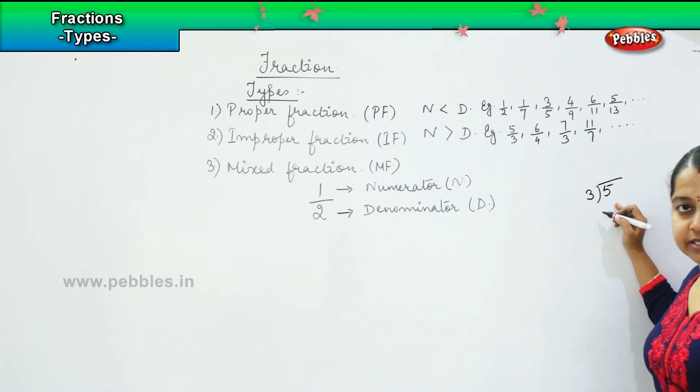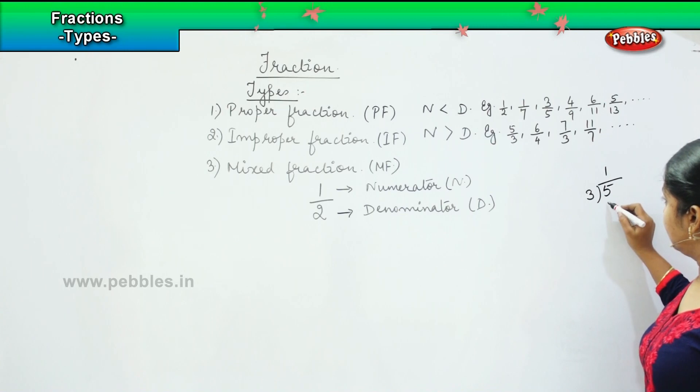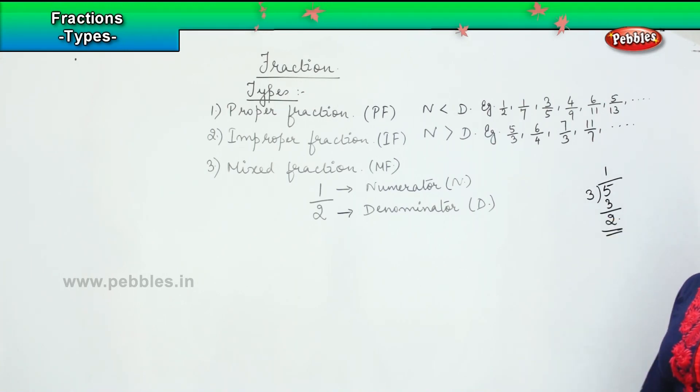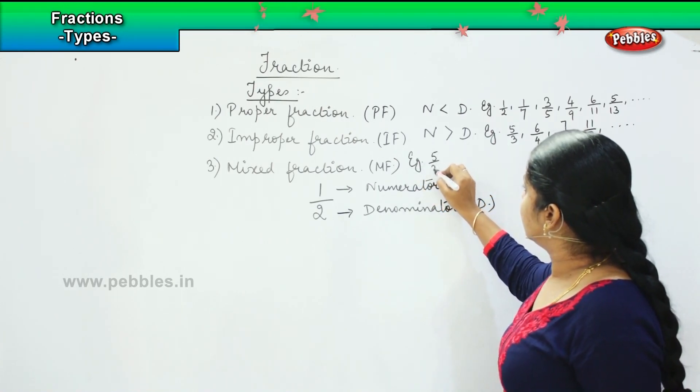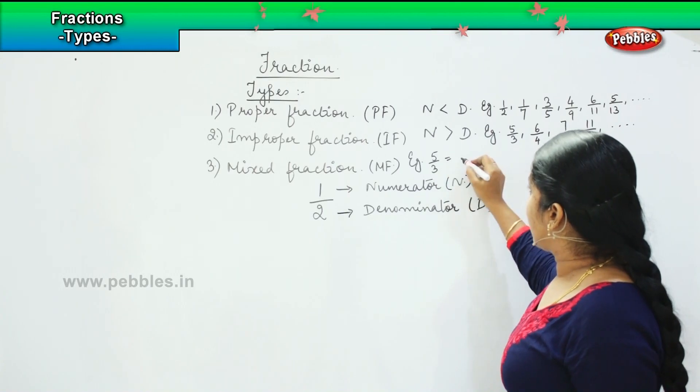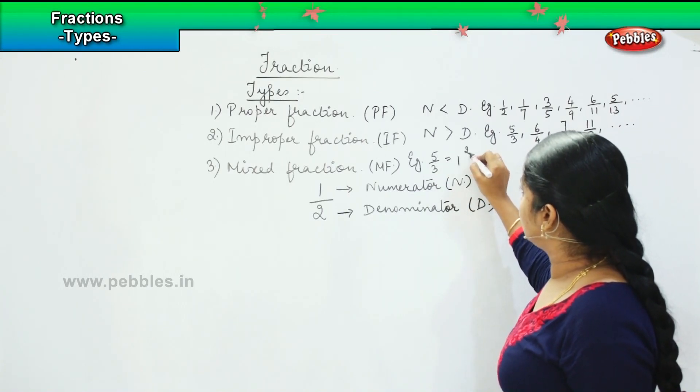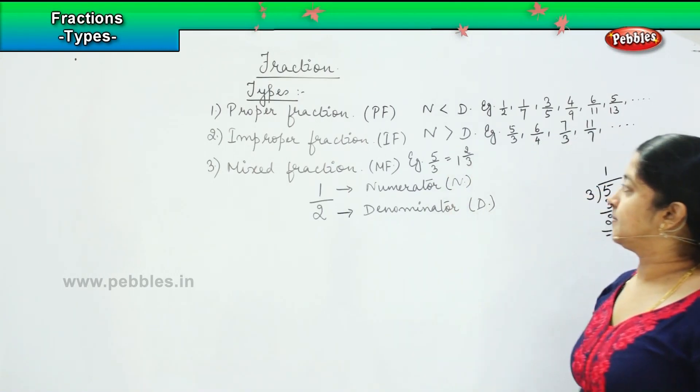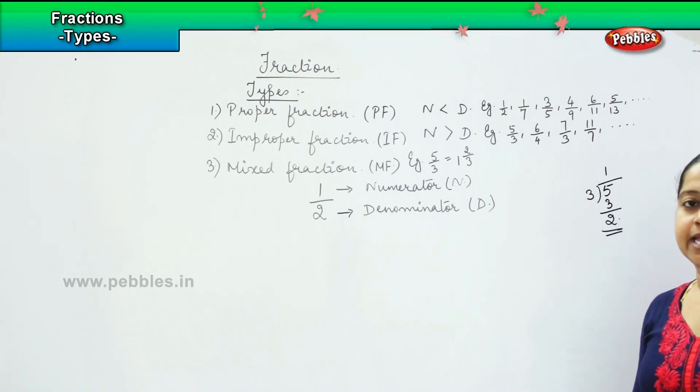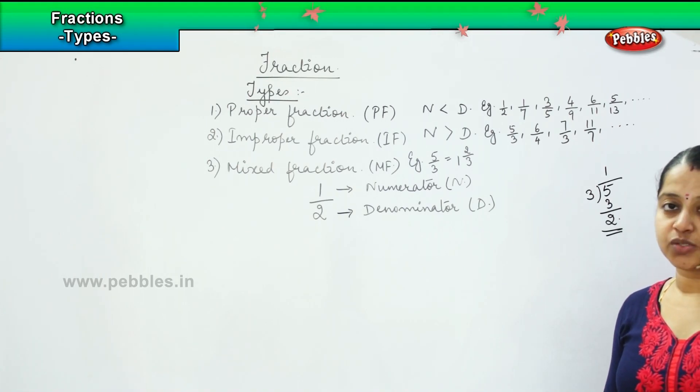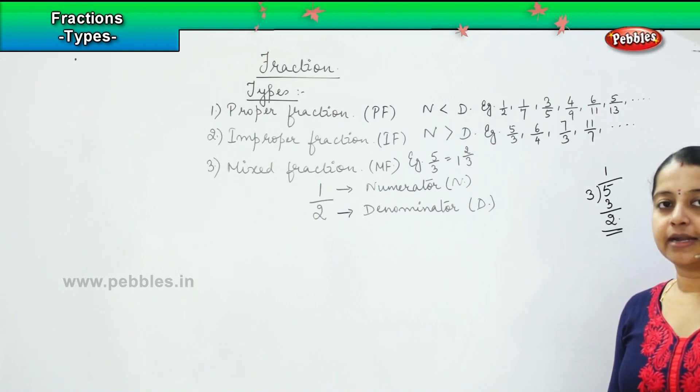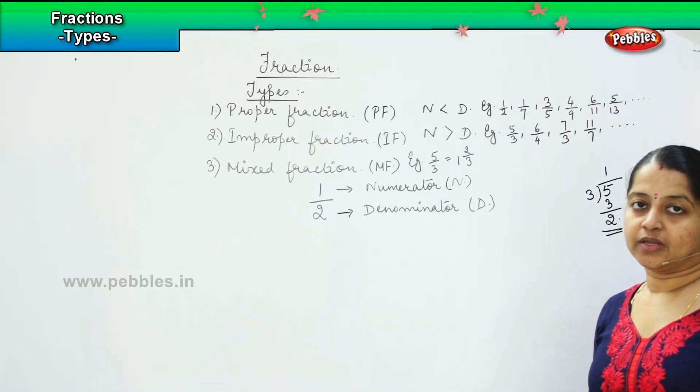So now, I will be dividing this number by 3. So 1, 3 and 2. My remainder is 2. So how will I write 5 by 3 here? This improper fraction can be written as 1, 2 by 3. Now, if I say that I have had 1 and a half liter of water today, that is easy to say rather than saying that I had 3 by 2 liter of water, right?